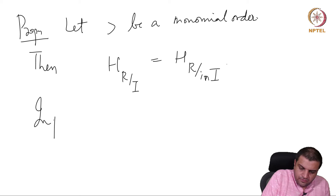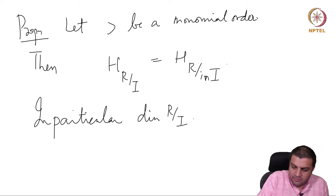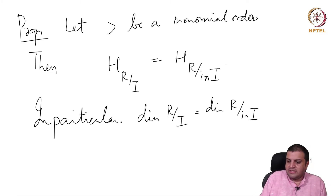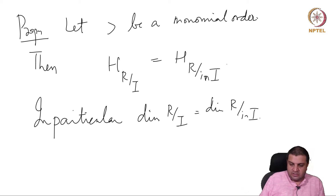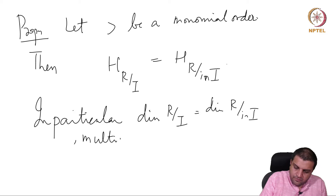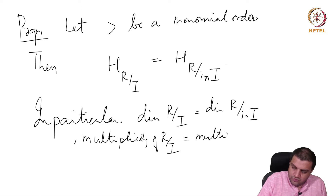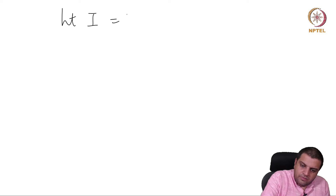In particular, the dimension of R mod I equals the dimension of R mod in(I). Any quantity that can be recovered from the Hilbert series should agree for both. The dimension is given by the exponent in the denominator (1 minus t) to the something, so dimensions are the same, multiplicities are the same, and because of this, height is the same.